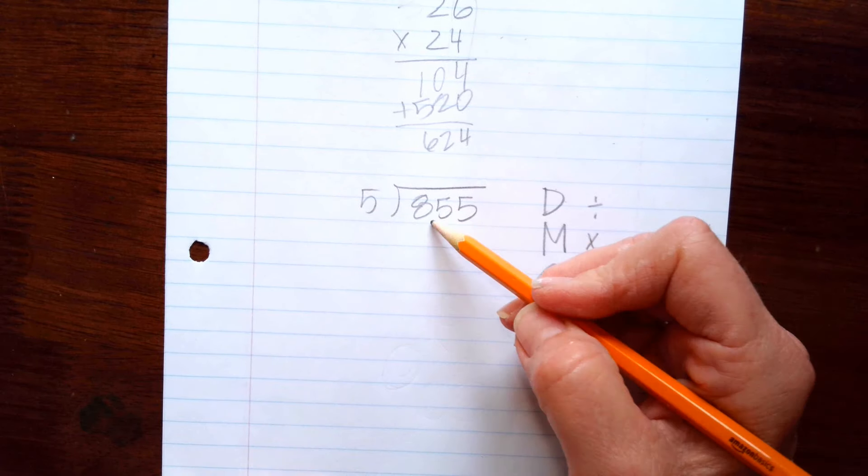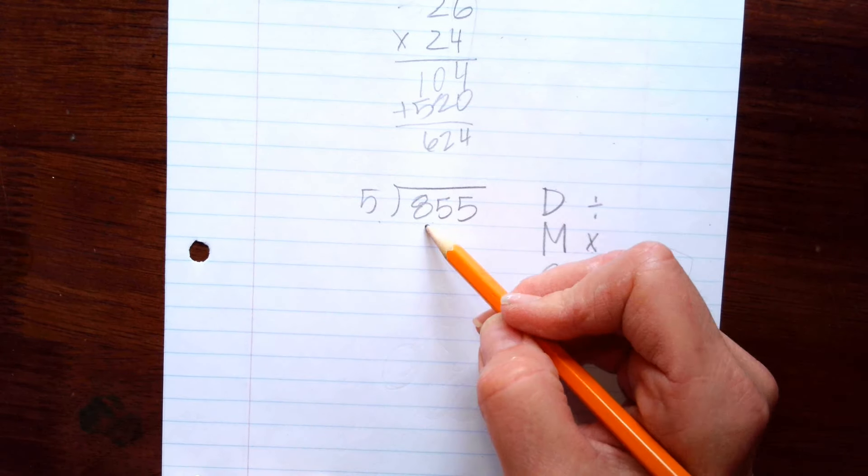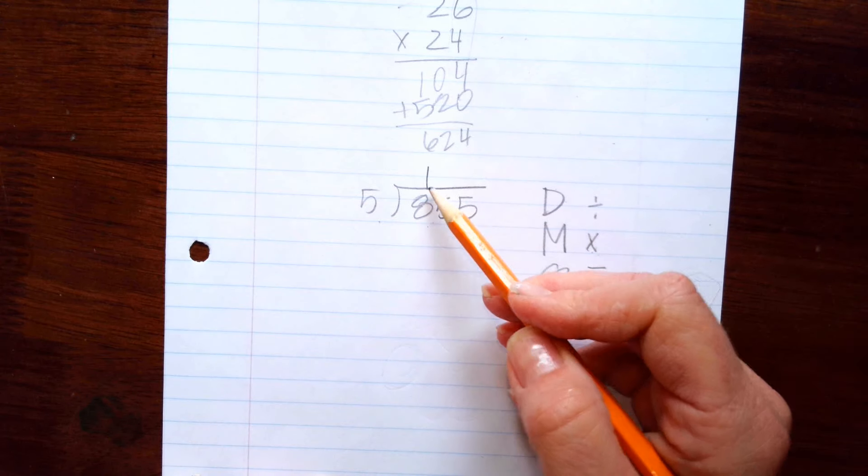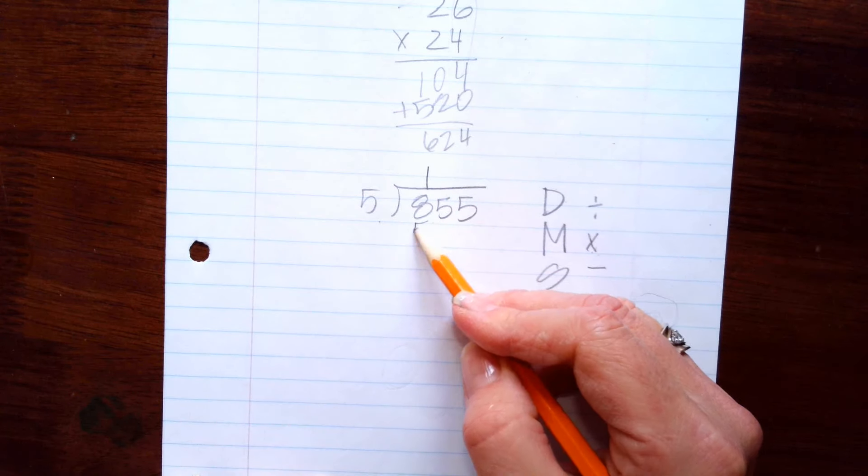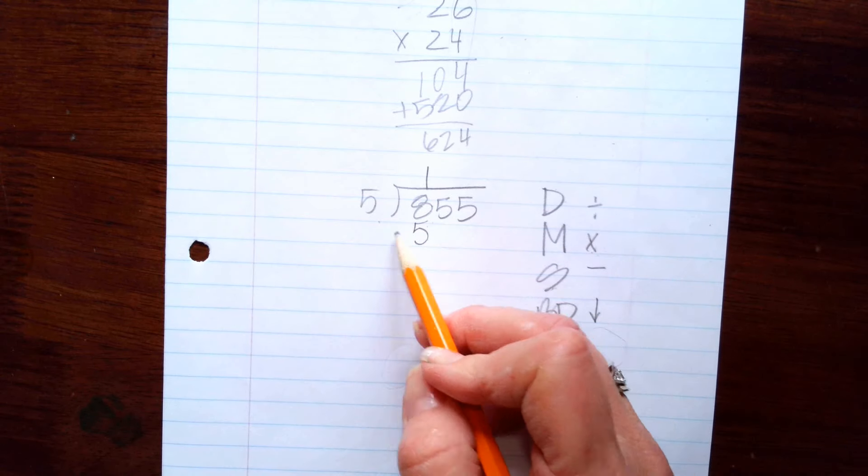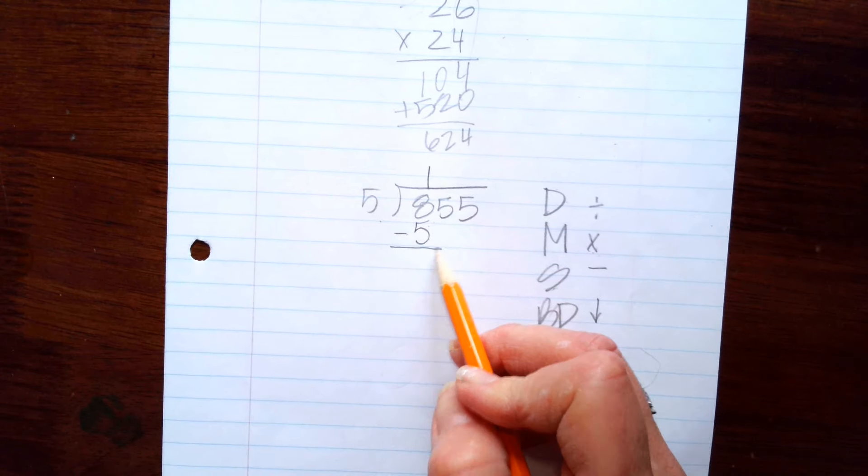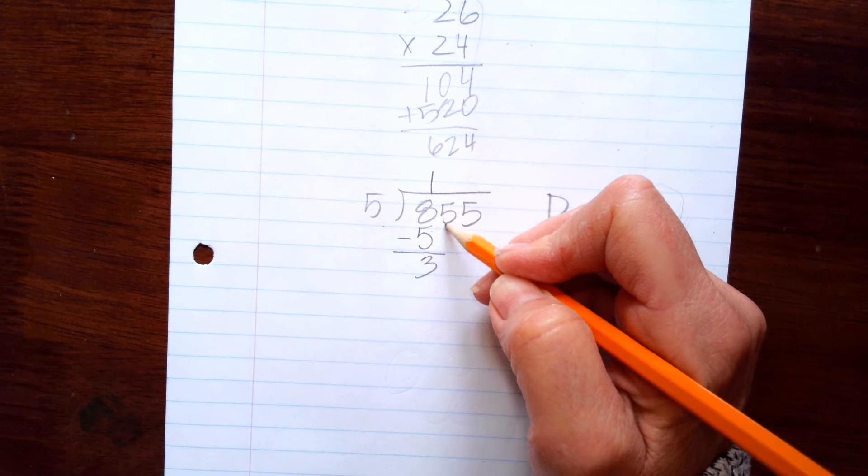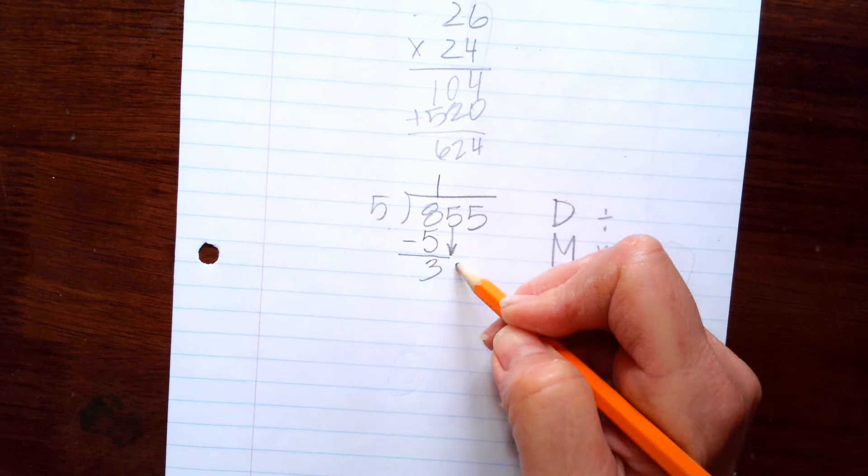So the first step is division. Five goes into eight one time. Now we multiply. Five times one is five. You put that right here. Now we subtract. Eight minus five is three. Now we bring down. We bring down the next digit, which is a five.